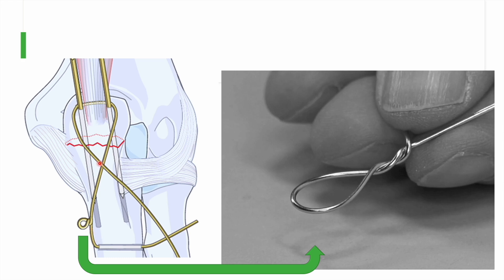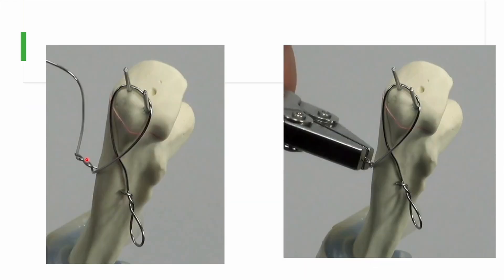The SS wire is then passed in a figure-of-8 position beneath the tendon insertion and behind the K-wires, as close to the bone as possible. The wire is twisted on the opposite side in line with the previous loop, creating two twisting points — one on each side — so that when tightening, compression occurs equally on both sides.